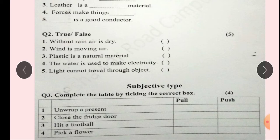What option are we going to tick? Number 2: Close the fridge door. Close the door. Number 3: Hit a football. Hit or kick. Number 4: Pick a flower. Pull the flower.